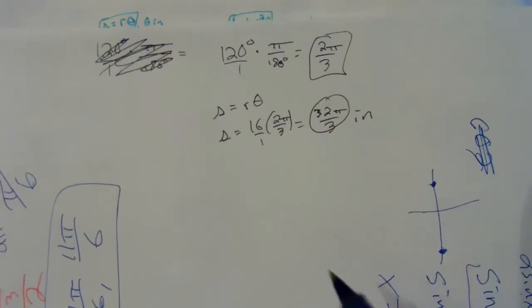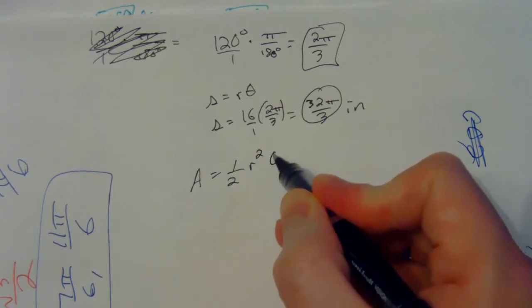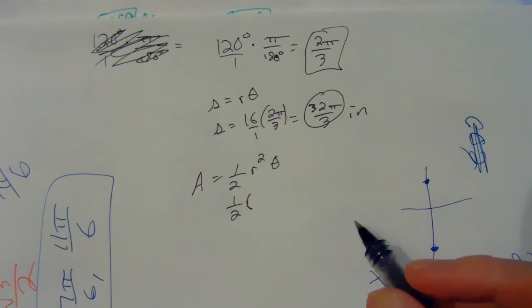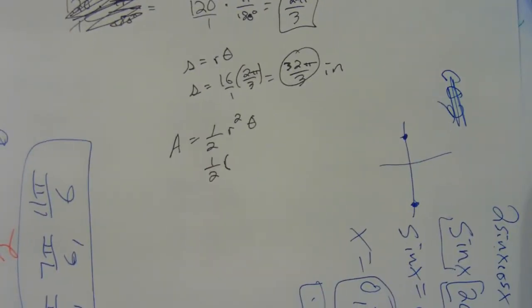And then for the area of a sector, we'll do a equals one half times the r squared theta. And again, the theta has to be in radians, which is why we found the two pi over three. So you can't just plug in the 120 right there, you're going to get it wrong.